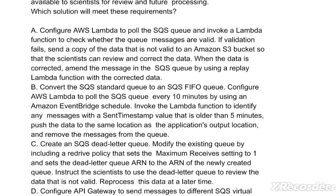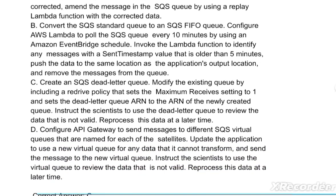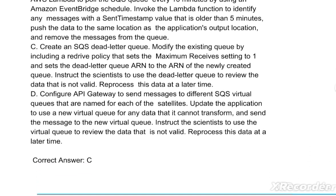Option C: Create an SQS dead letter queue. Modify the existing queue by including a redrive policy that sets the maximum received setting to 1 and sets the dead letter queue ARN to the ARN of the newly created queue. Instruct the scientists to use the dead letter queue to review the invalid data and reprocess it at a later time. Option D: Configure API Gateway to send messages to different SQS virtual queues named for each satellite. Update the application to use a new virtual queue for any data it cannot transform, and instruct the scientists to use the virtual queue to review and reprocess invalid data. The correct answer is option C.